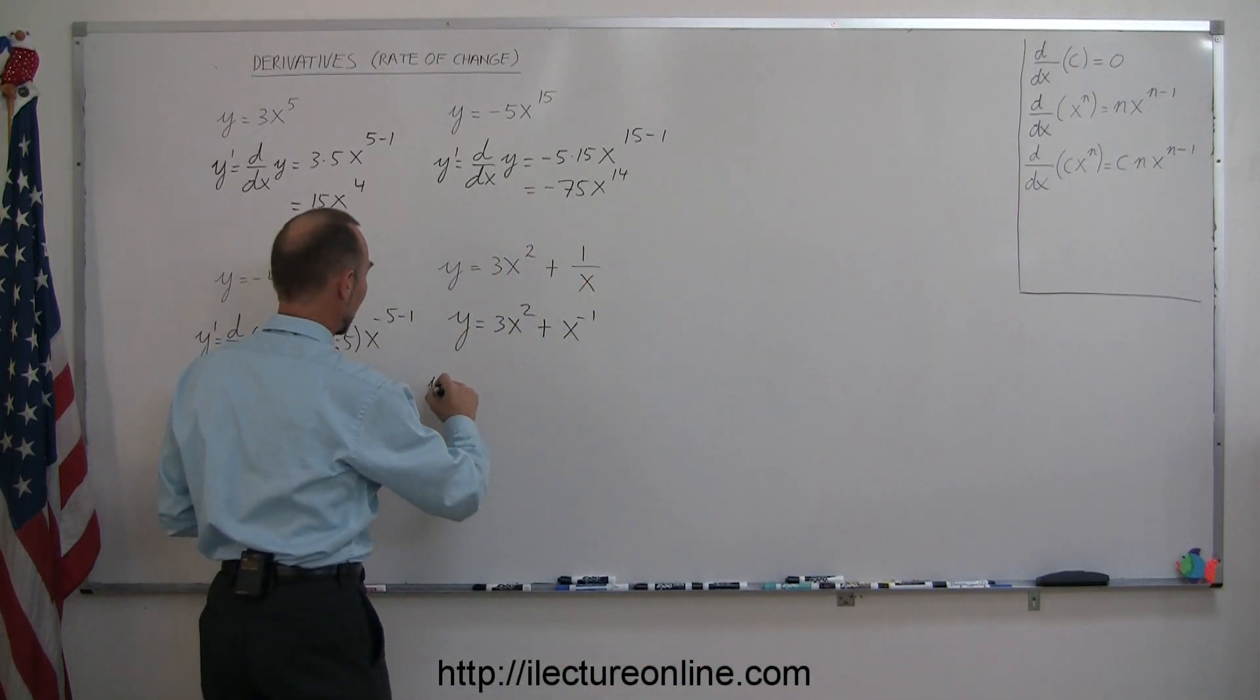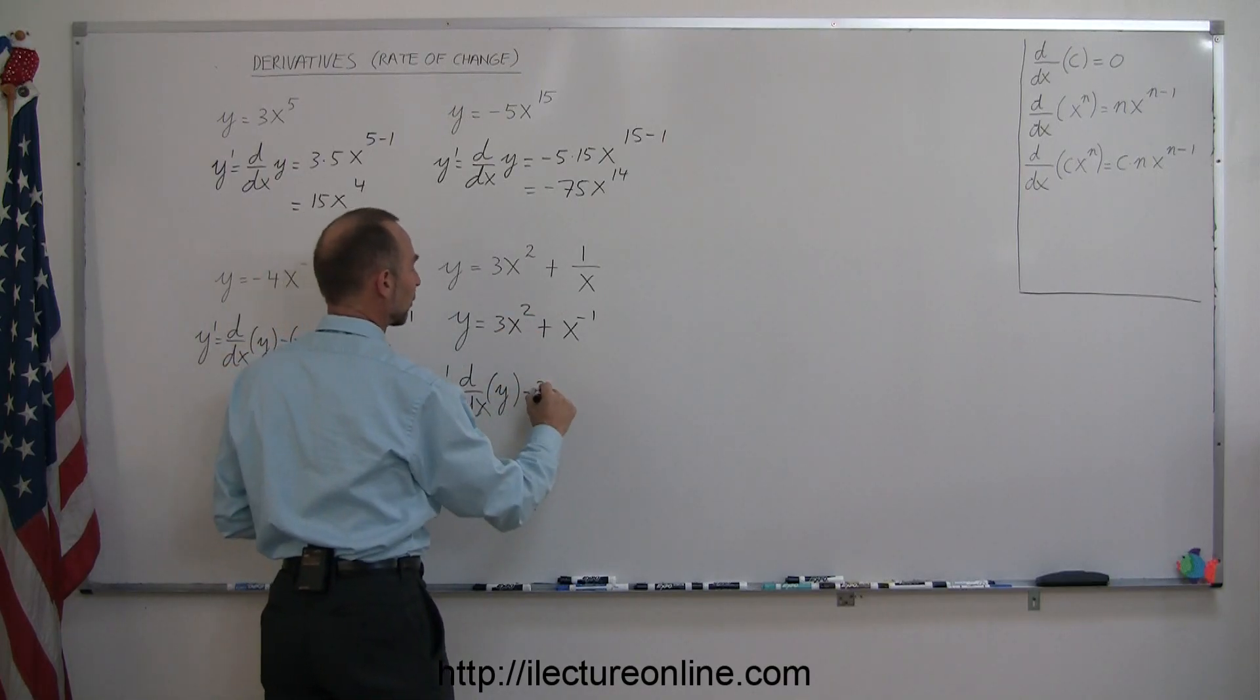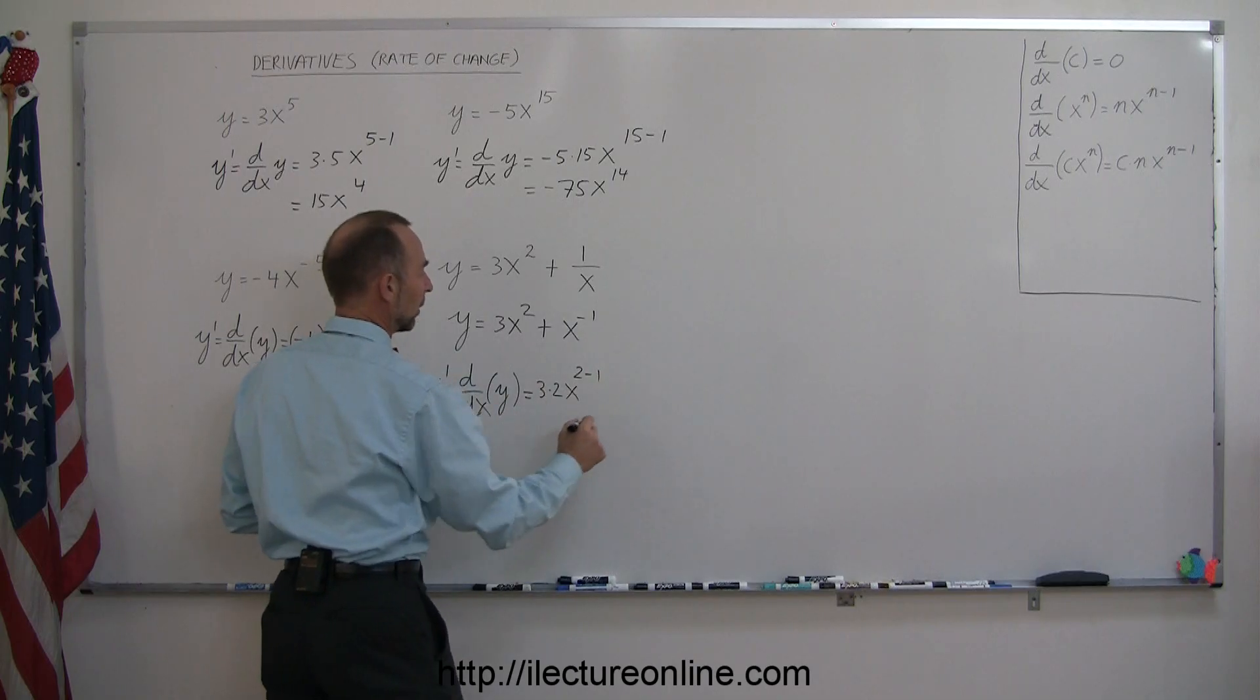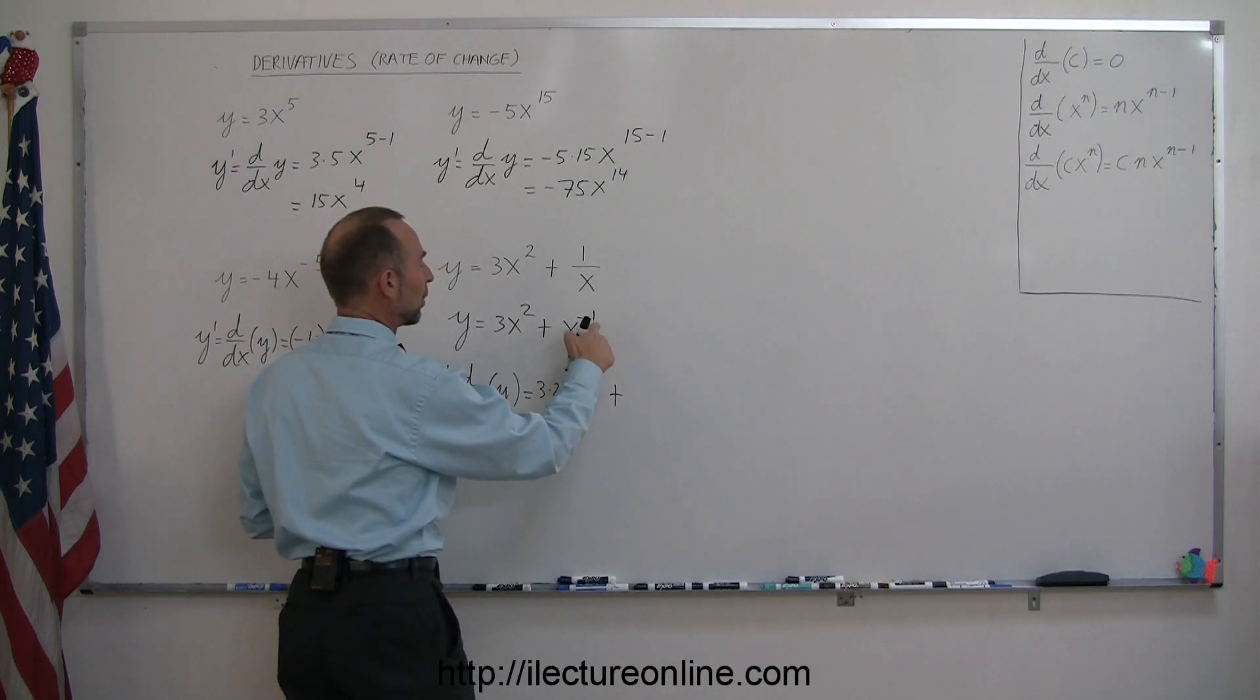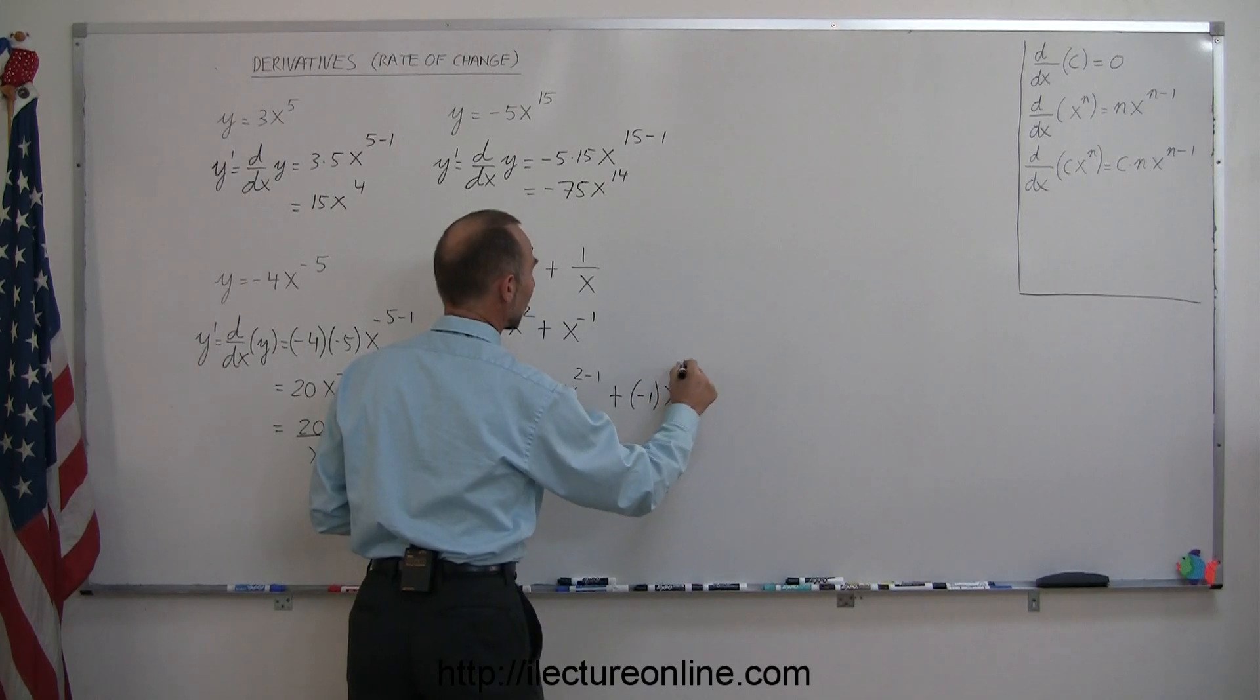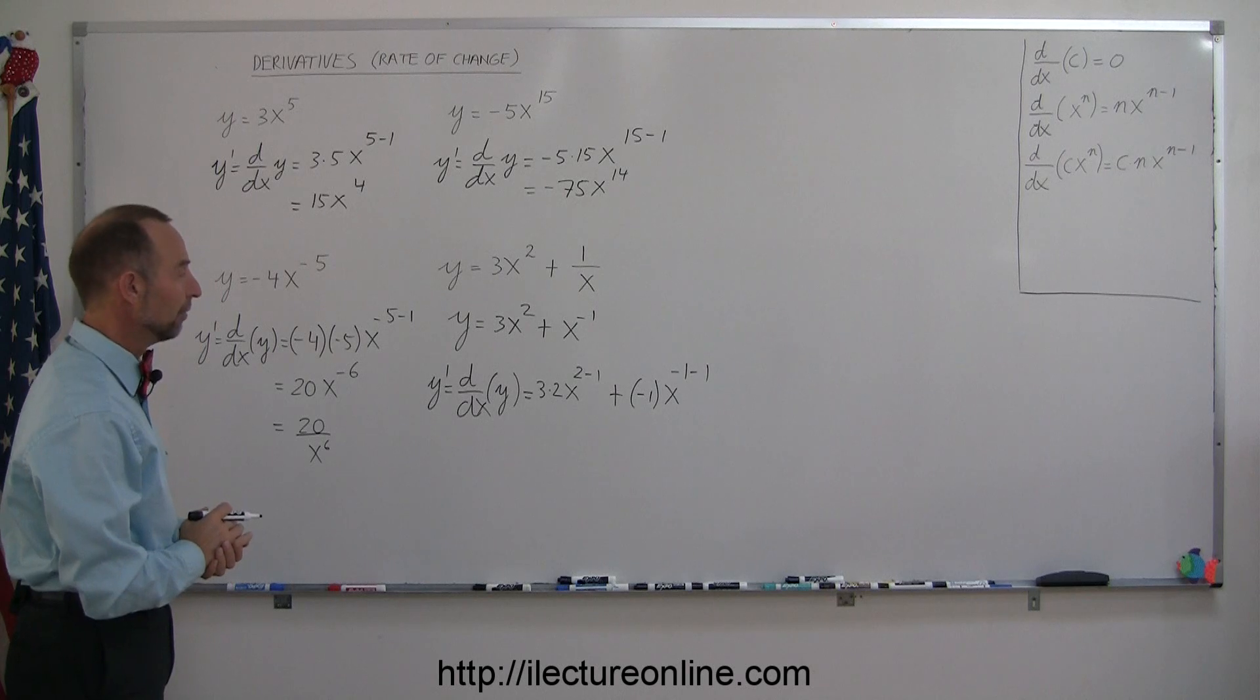So we can say that y prime, which is d/dx of y, equals, we bring the exponent down, so we have 3 times 2x to the exponent minus 1 plus we bring the exponent down, minus 1 times x to the minus 1 minus 1. We subtract 1 from the exponent, regardless if positive or negative.